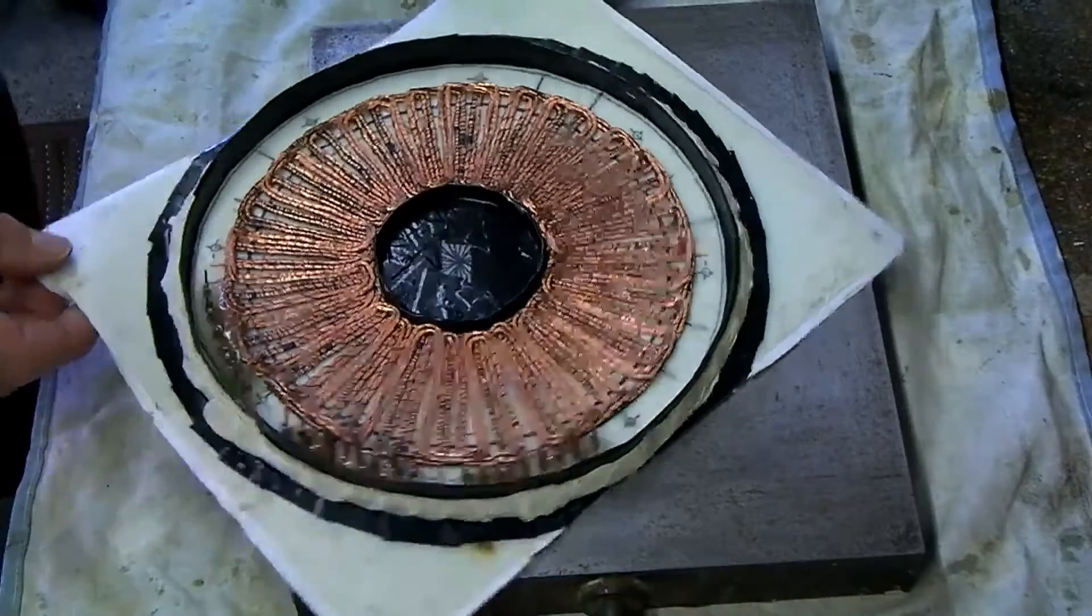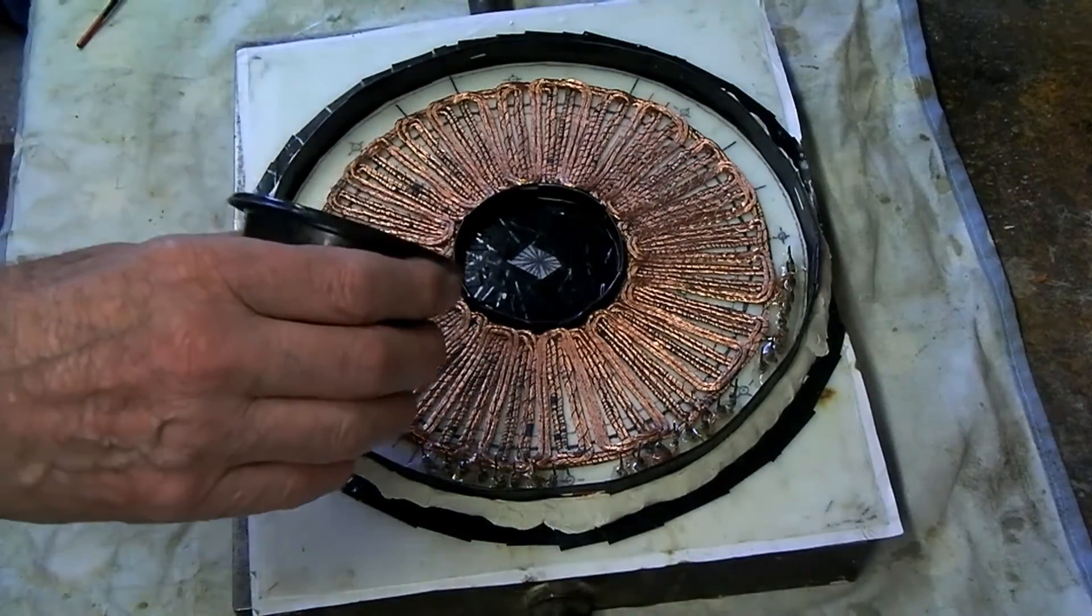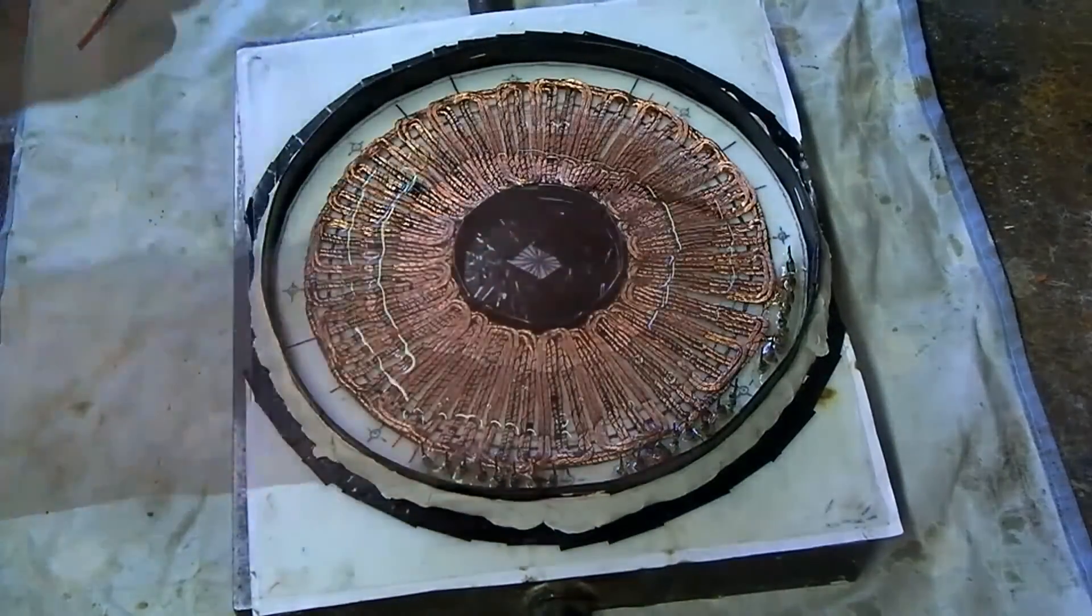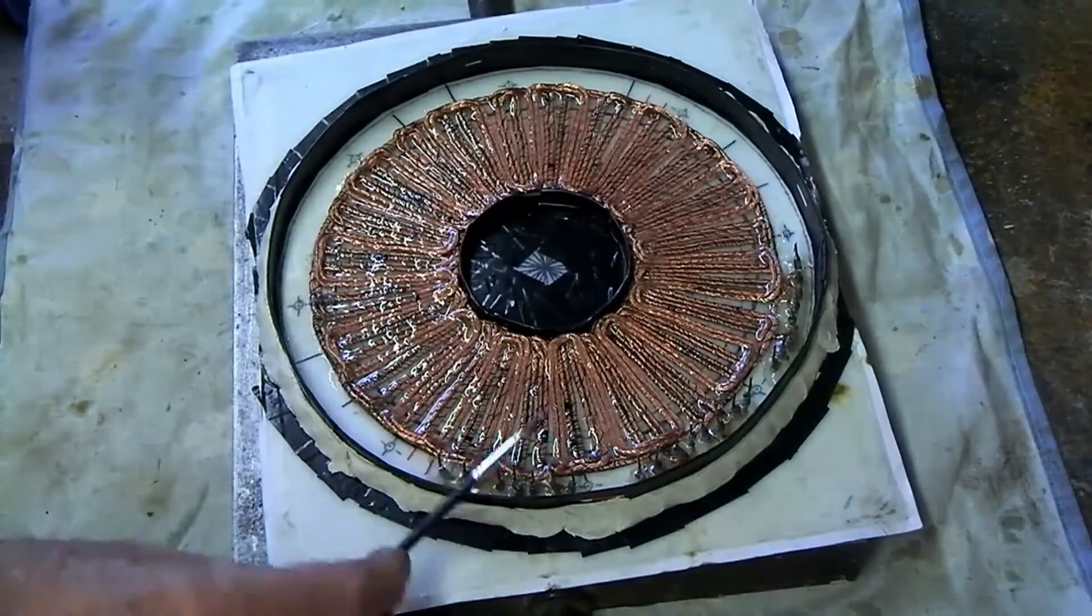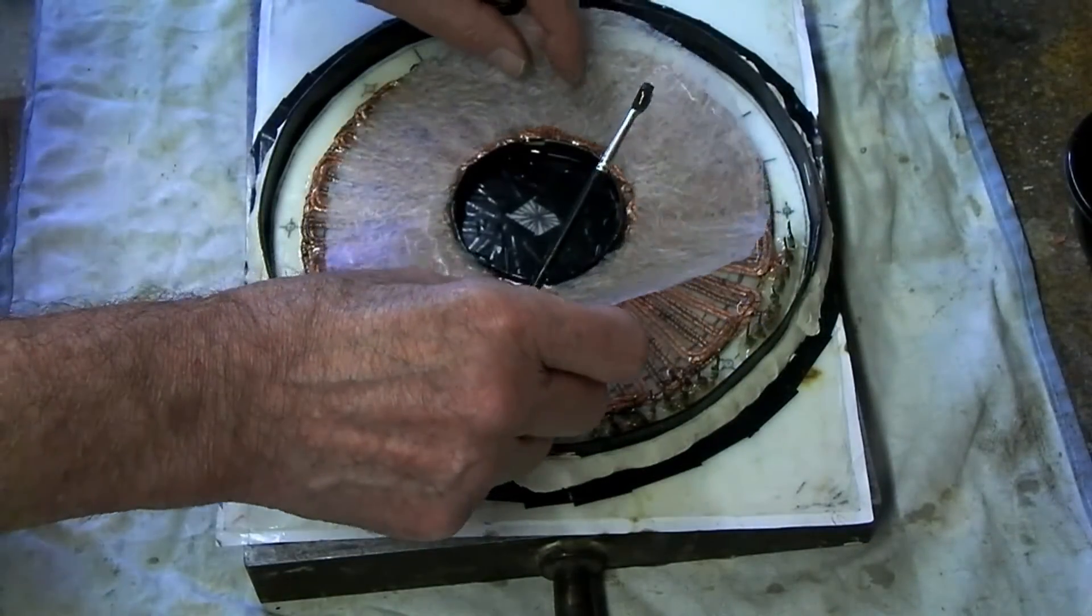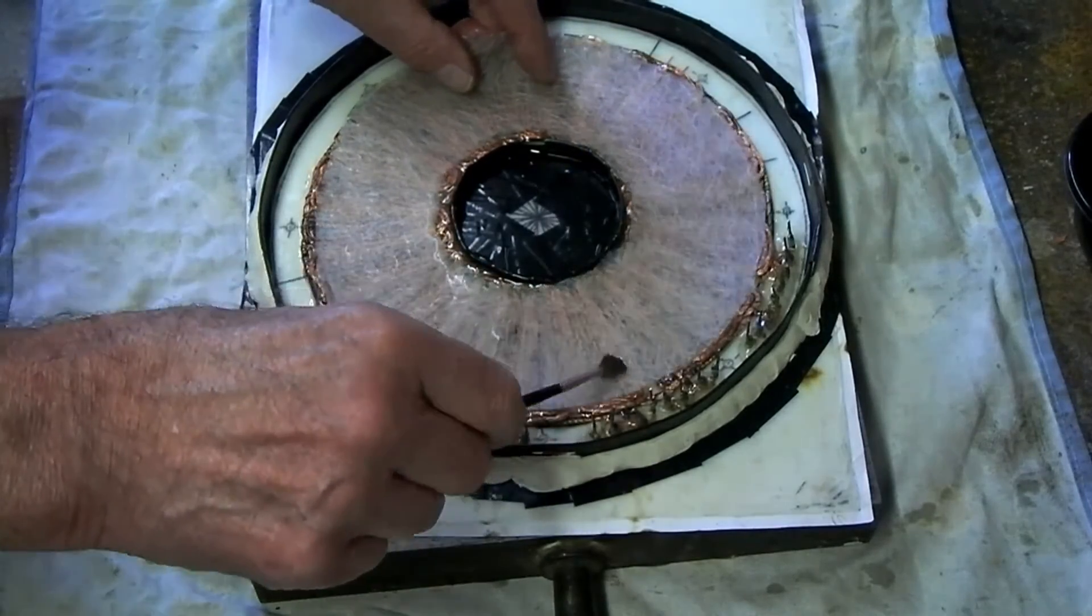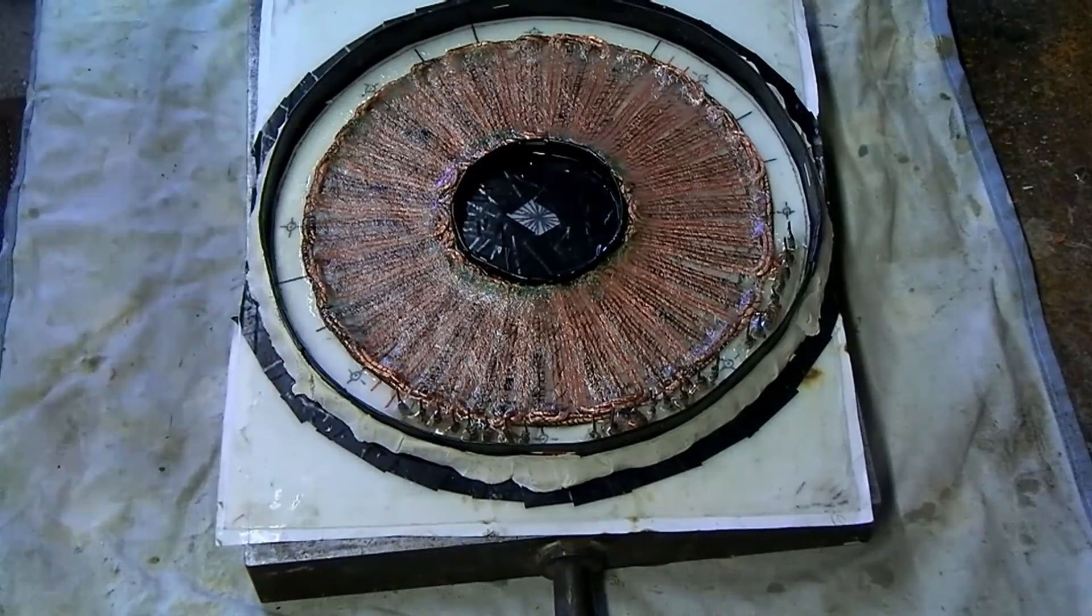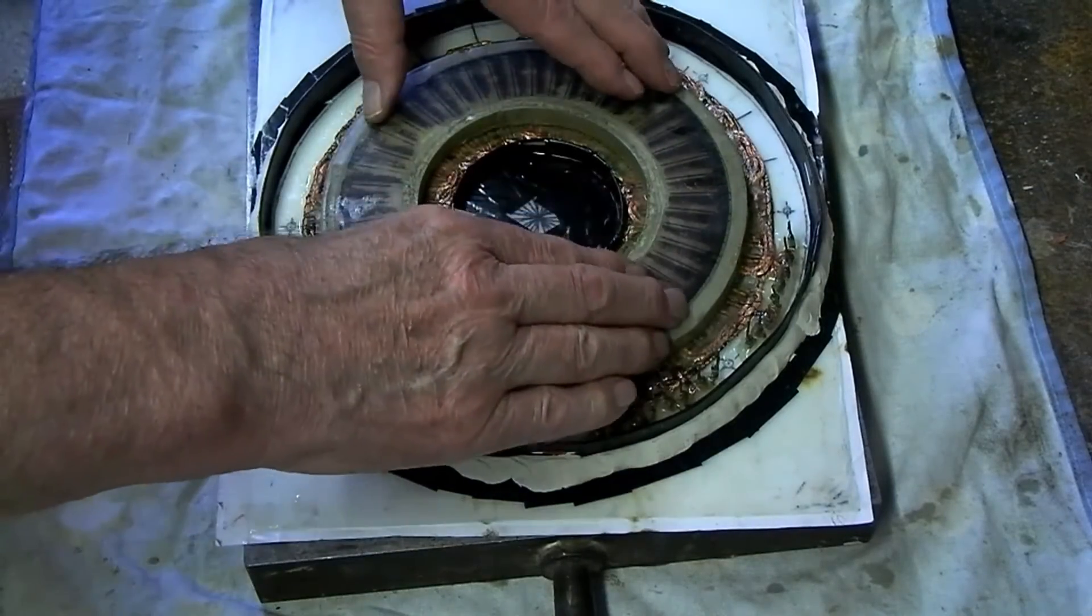The winding is impregnated with epoxy resin and a further fiberglass sheet is added. Excess resin is removed and pressure is applied throughout setting to ensure flatness and minimum thickness.